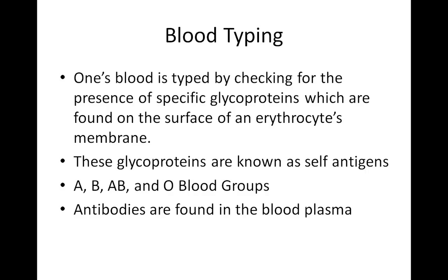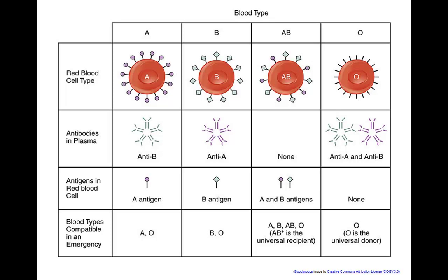There are four blood groups: A, B, AB, and O. Seen diagrammed here are the four main blood groups. Blood type A has A antigens found on the surface of the red blood cells membrane. Type B has the B antigen. Type AB has both A and B antigens. But blood type O has no antigens on the surface of the red blood cells membrane.